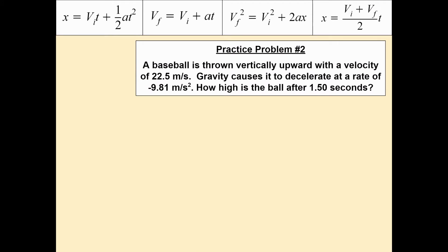A baseball is thrown vertically upward with a velocity of 22.5 meters per second. Gravity causes it to decelerate at a rate of negative 9.81 meters per second squared. How high is the ball after 1.5 seconds?